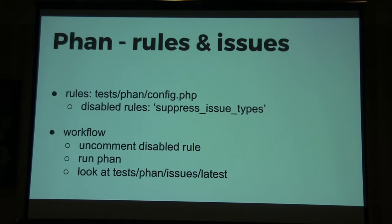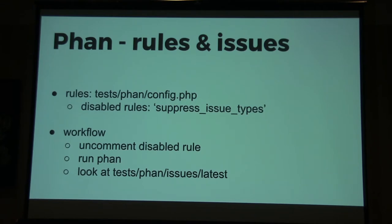With PHPStan there is also a config file where everything is configured, including an array of suppressed issue types. When you look at that array, you can disable rules from there and then run PHPStan. Run it again — it's the same idea: you have issue types that are suppressed, you re-enable them by uncommenting the disabled rule, and run PHPStan. The output on your console looks a bit disordered, so better to look at the generated output file from the latest run, where you can see all the issues clearly.